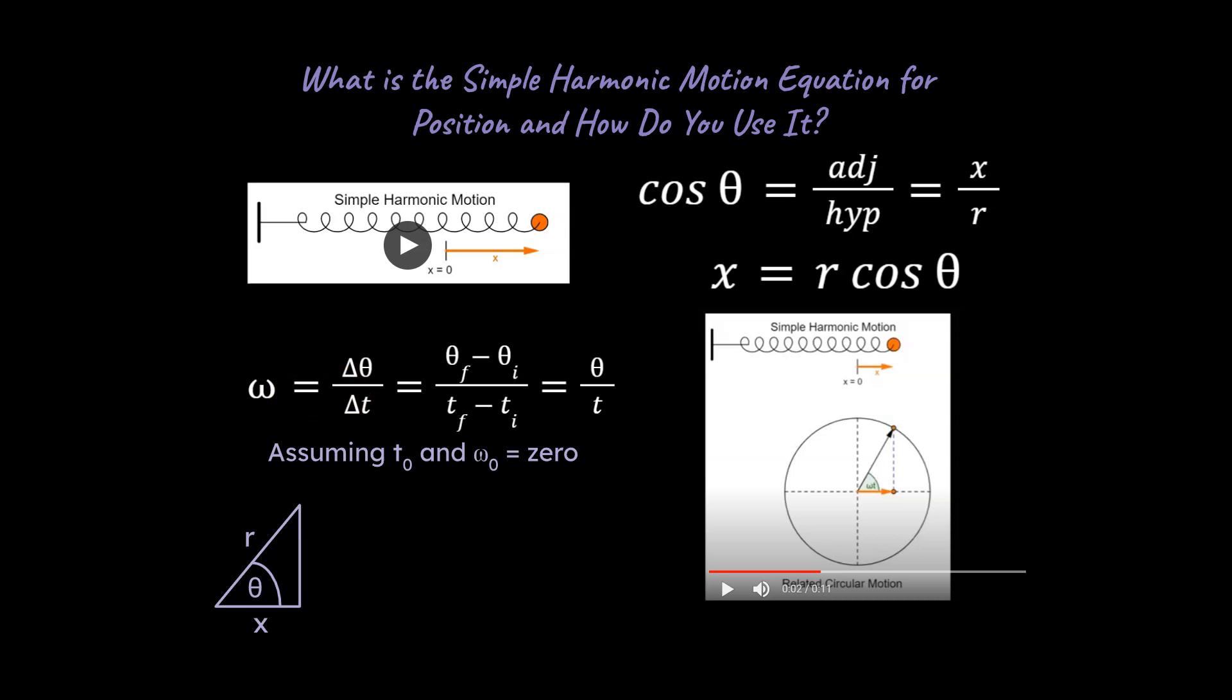So then we could say, well, let's imagine that our initial time and our omega initial are both equal to zero. And that's the case for most cases when dealing with time. So if that's what we were dealing with, we could say theta is equal to omega times time.